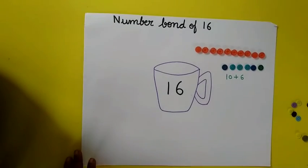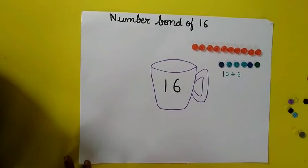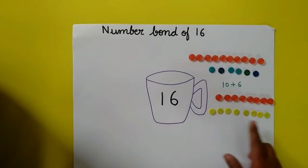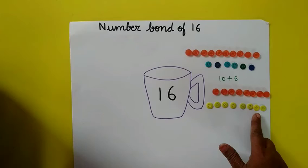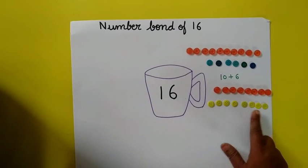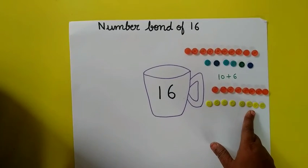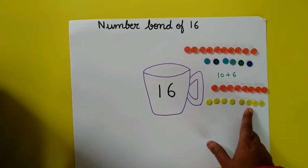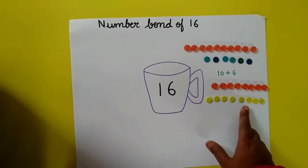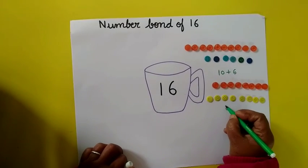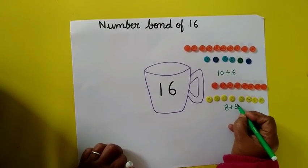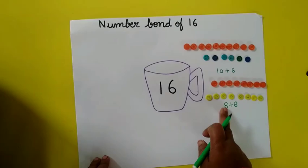I will show you one more time. So children, here are 8 buttons upside and 8 buttons downside. So 8 plus 8 is how much children? Come on, count. Yes, 16. So we will write here 8 plus 8 is 16.